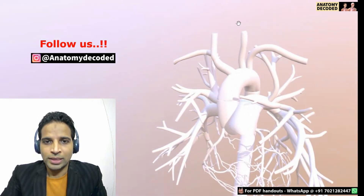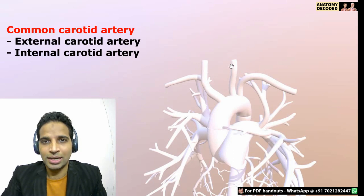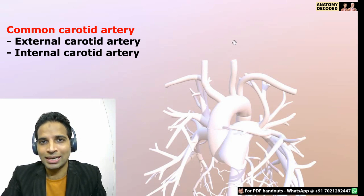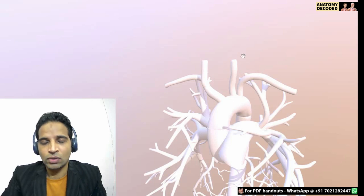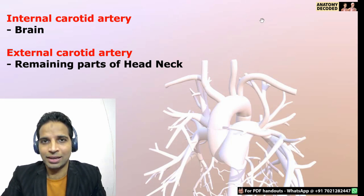The common carotid artery, when traced upwards, divides into the external carotid artery and the internal carotid artery at approximately the level of the upper border of the thyroid cartilage — a part of the larynx. The internal carotid artery is the chief blood supply to the brain, entering the base of the skull through the carotid canal. The external carotid artery supplies the remaining part of the head and neck region.